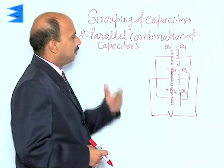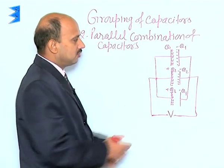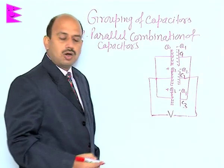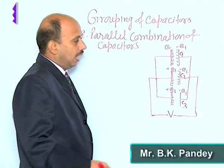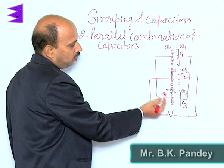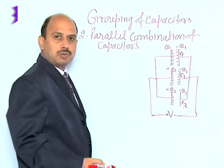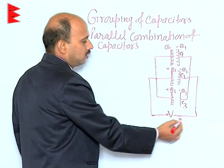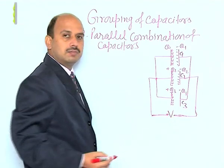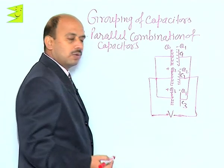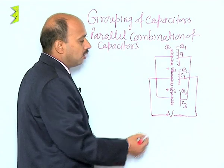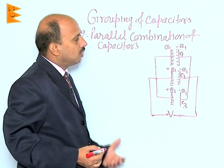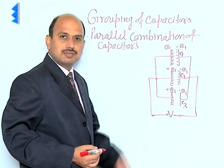See here the parallel combination of capacitors. There are three capacitors having capacitance C1, C2, and C3. All three are connected in parallel — the positive terminals of all capacitors are connected to one terminal of the battery, and all negatives are connected to the other terminal. So this side is at higher potential and this side is at lower potential. In this case, the charges will be different in all three capacitors, but the potential difference will remain the same across each capacitor.